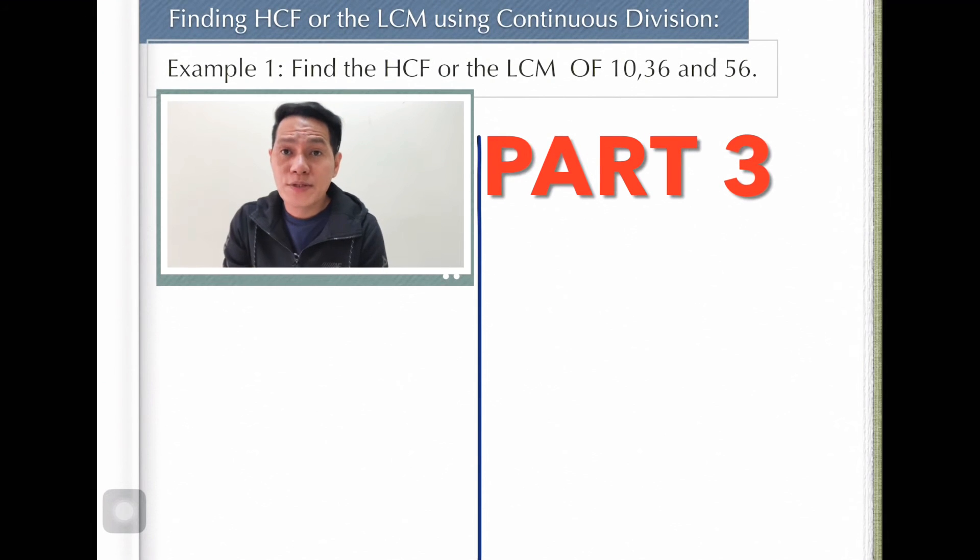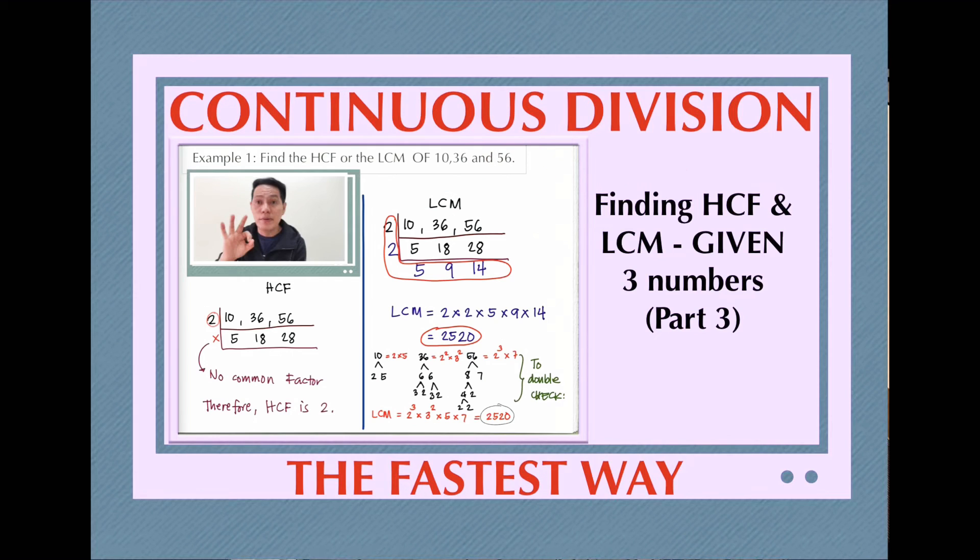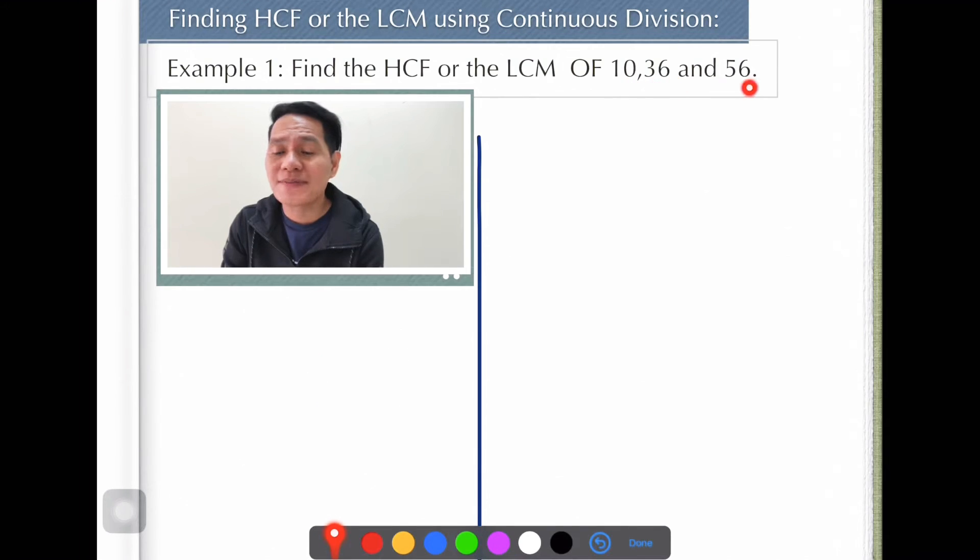Okay, here we go for our next example, finding the HCF or the LCM using continuous division. Now I have here a problem: find the HCF or the LCM of 10, 36, and 56. This time there are three numbers involved. How are we going to apply this method, continuous division, in finding the HCF or the LCM of three numbers? Here we go.